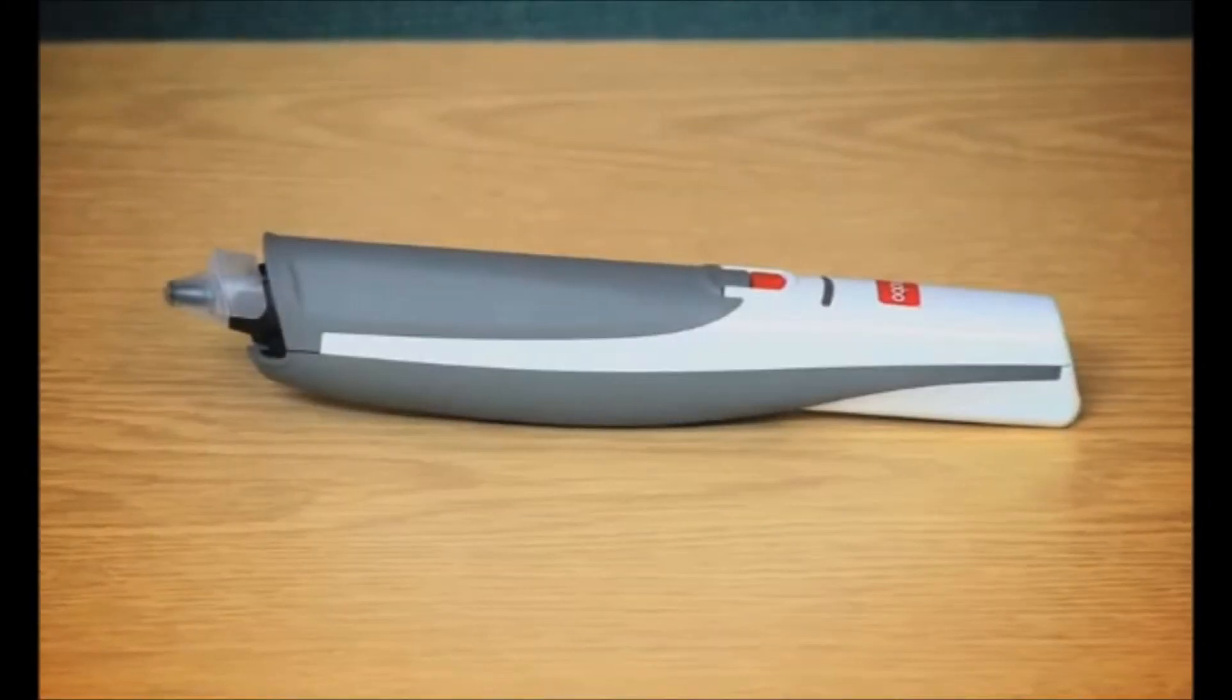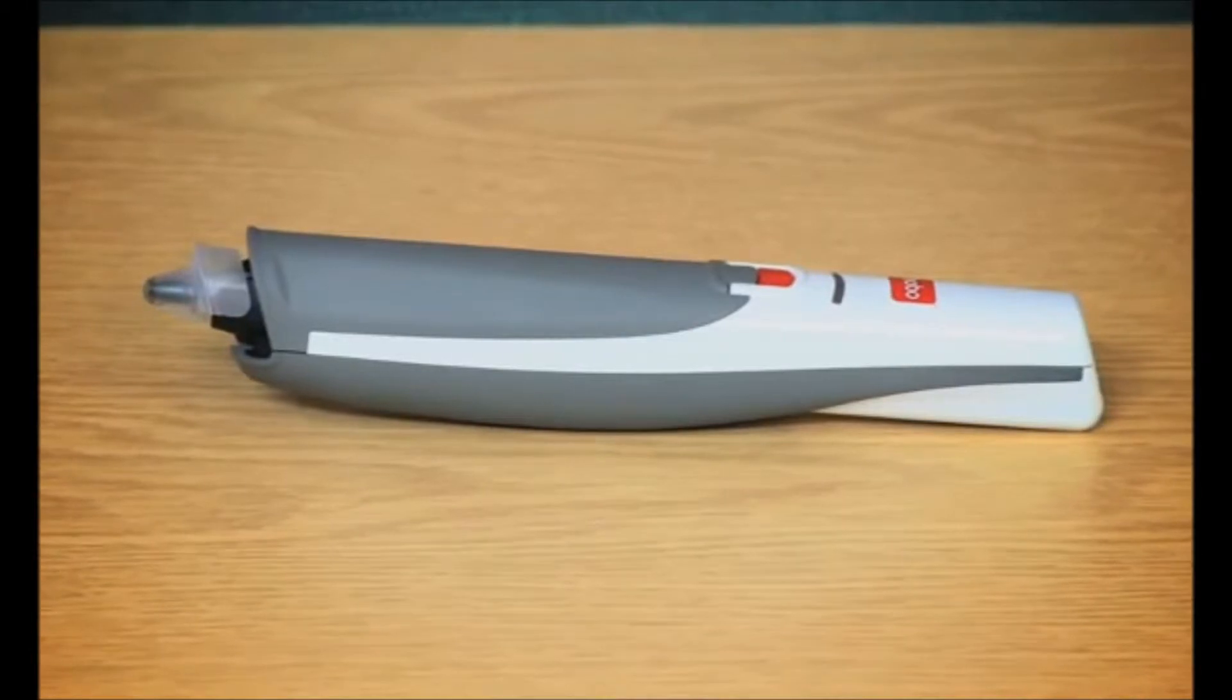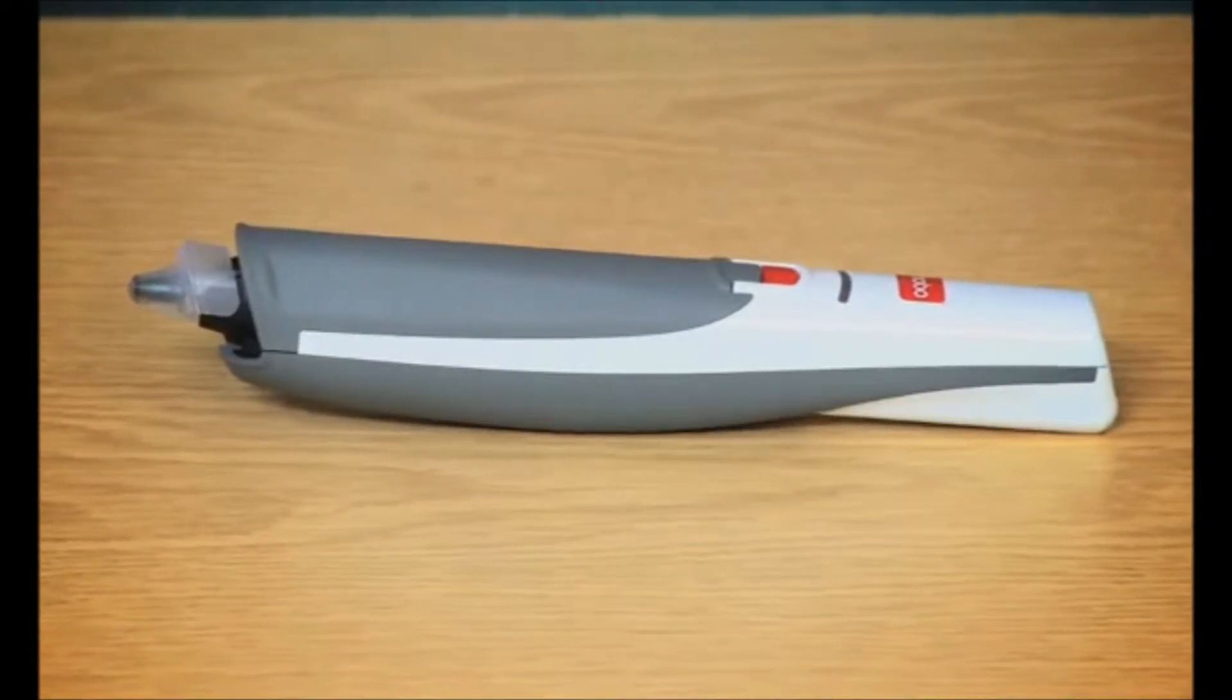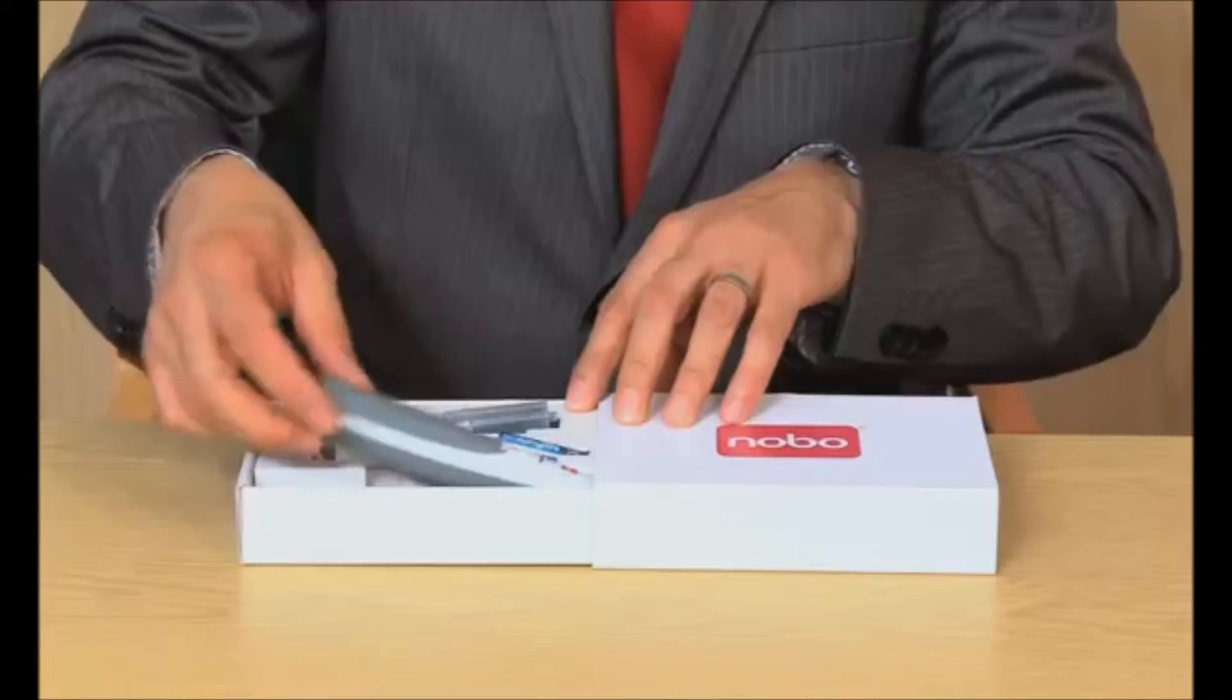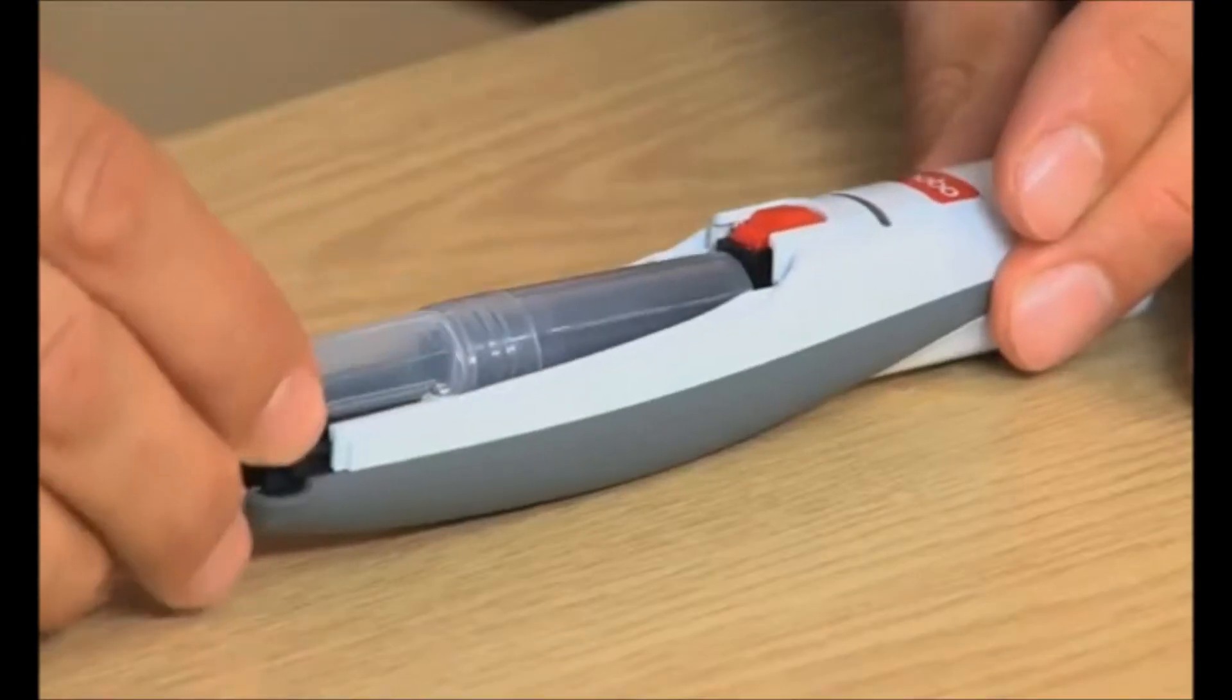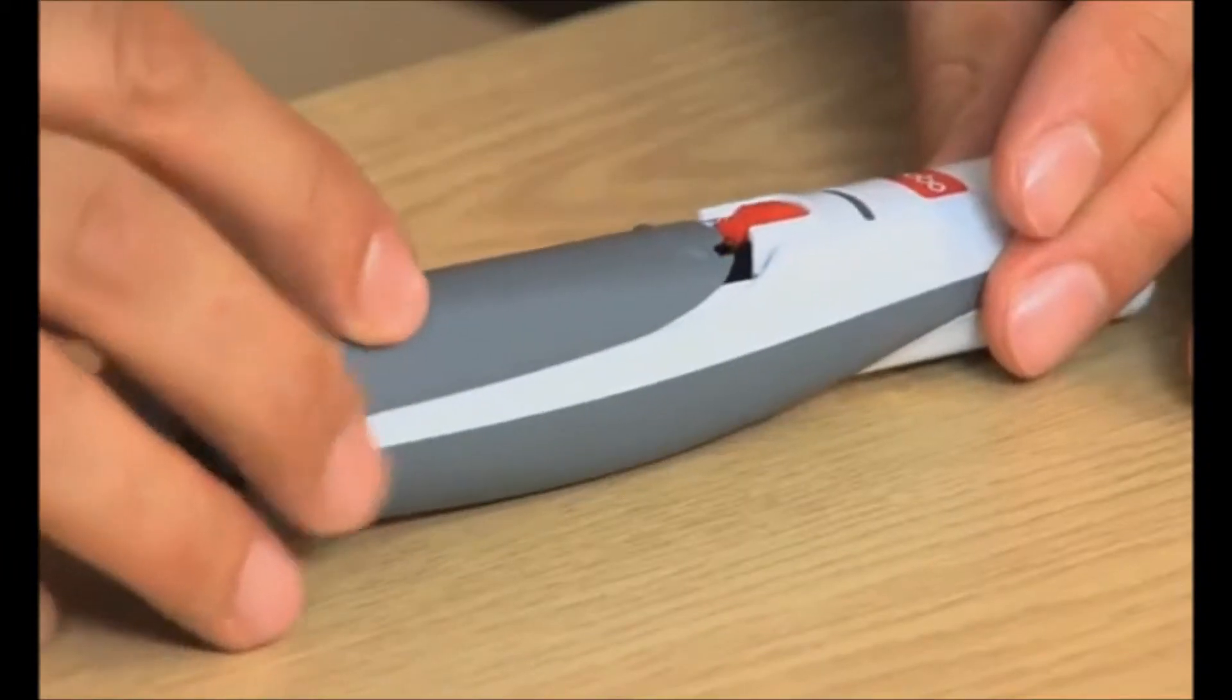Before you can use a Nobo Capture Digital Marker Pen, you must insert a battery and an ink cartridge. Take the pen, slide off the top cover and, nib-end first with the spine facing upwards, insert your preferred cartridge color and replace the cover.